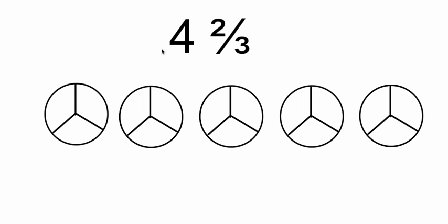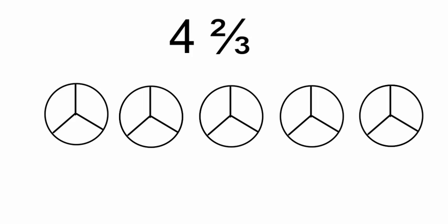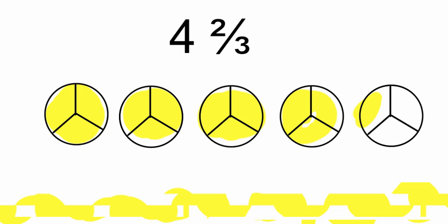Okay, so we're going to start renaming mixed numbers now. We practiced renaming just a whole; now we're going to rename a mixed number. So I'm going to first start by shading — I'm going to get my highlighter — and shade what four and two-thirds looks like. That would be one, two, three, four, and two-thirds.